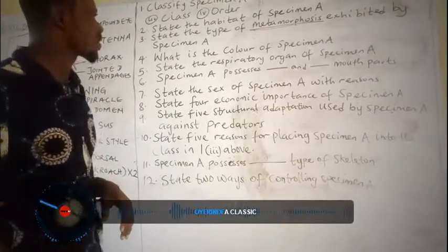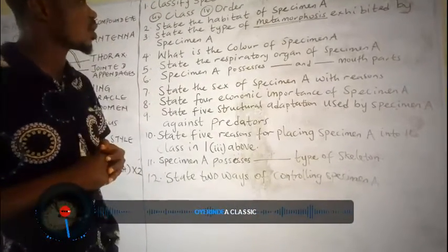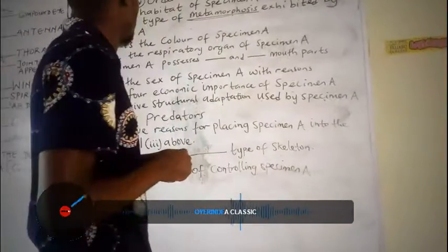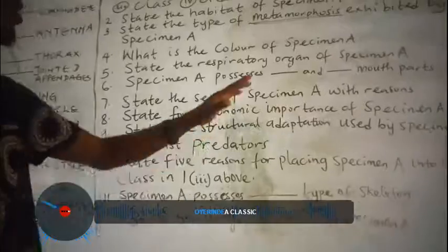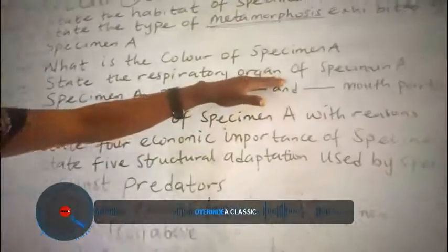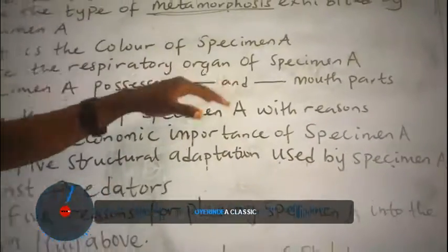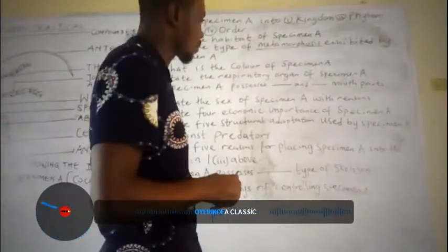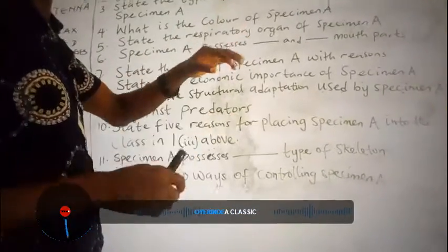The fifth question states the respiratory organ of specimen A. Like majorly all insects, specimen A respires through the tracheal system via the spiracles. The respiratory organ is the spiracles.